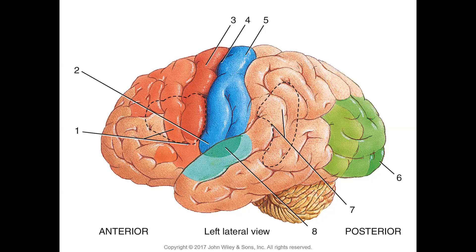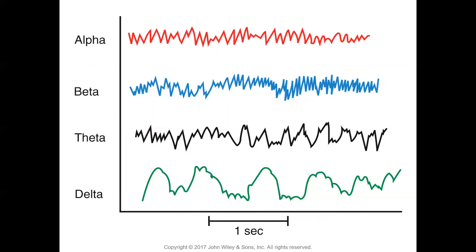One way to document brain function is by recording an EEG — an electroencephalogram. The brain's electrical action potentials can be picked up by electrodes attached to the head and displayed on a screen or paper. There are four basic types of brain waves: alpha, beta, theta, and delta. They differ by frequency, amplitude, and the conditions of wakefulness and sleep stages.